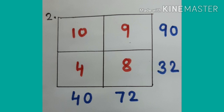Now, once again you see the second number puzzle. 10 9s are 90, then 4 8s are 32 on the right side. Then bottom if you see 9 8s are 72 and 10 4s are 40.